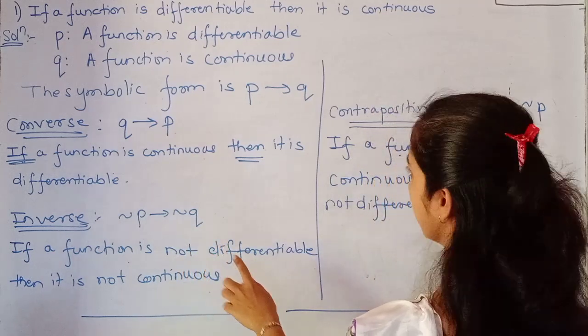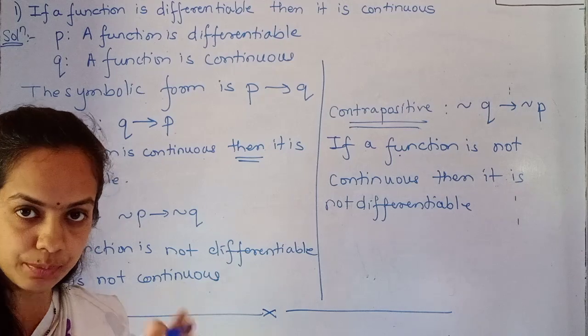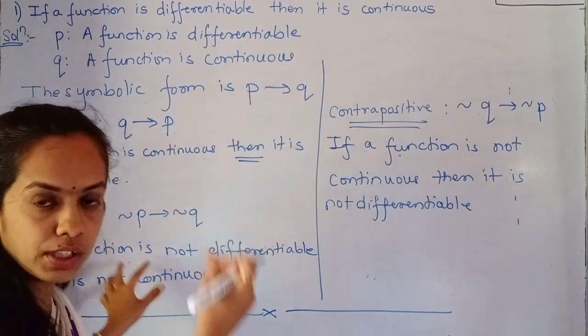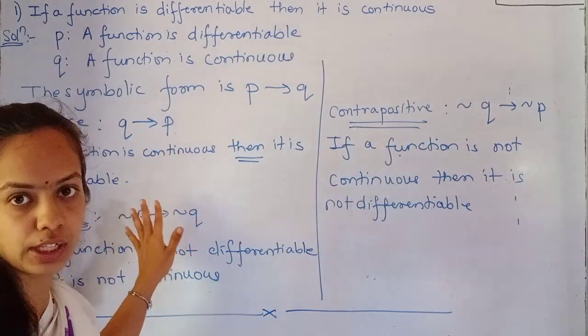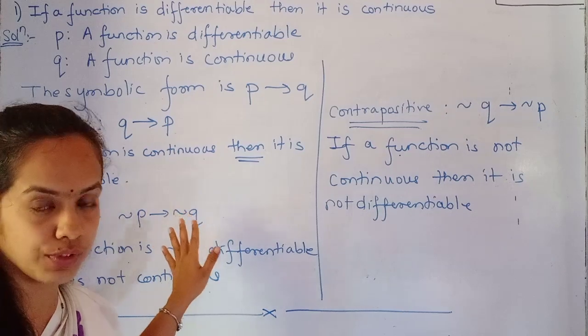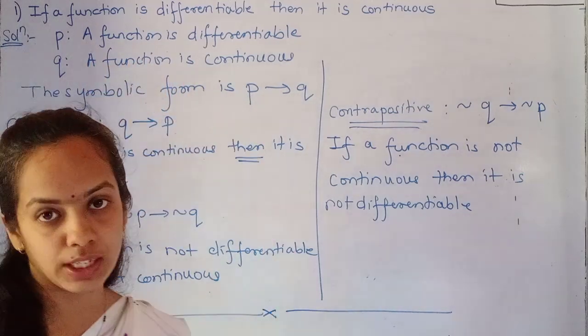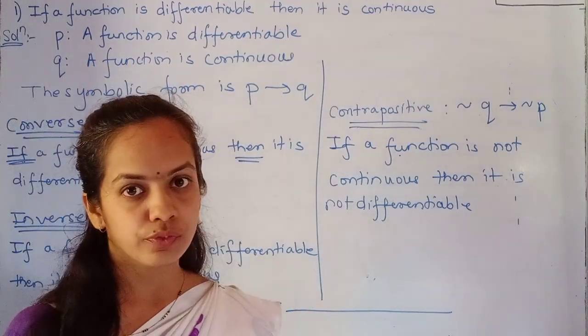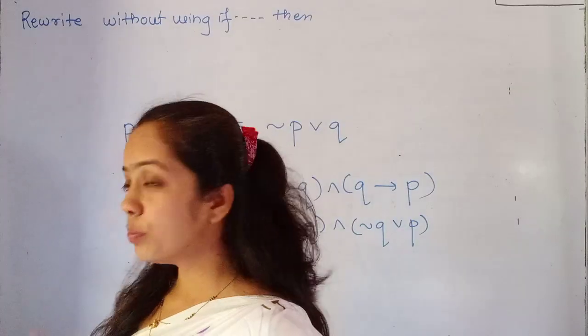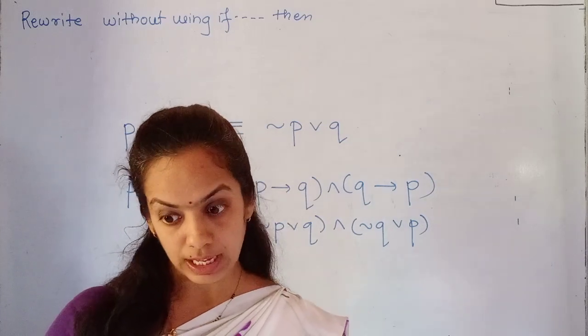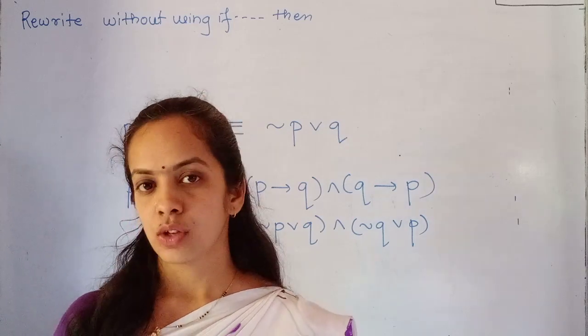Let me summarize: In converse, the second statement becomes first and the first statement becomes second. In inverse, we put 'not' in both parts of the question. In contrapositive, we take the converse and put 'not' in both parts. Take a quick screenshot of this. Let me show you one more example from the new syllabus.